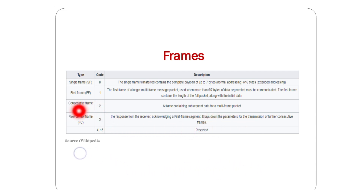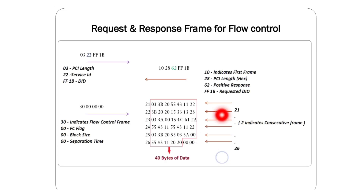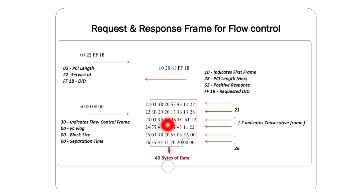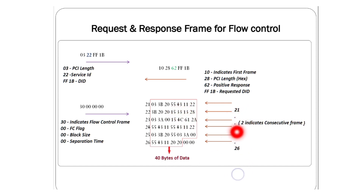The consecutive frame type is 2 — it contains subsequent data for a multi-frame packet. Here, 21 is the first consecutive frame, each carrying 7 bytes of data. Since the total is 40 bytes, the frames go from 21 through 26, which is 5 frames with 35 bytes, plus some remaining — covering all 40 bytes sent by the ECU. This is the overall concept of flow control or CANTP.